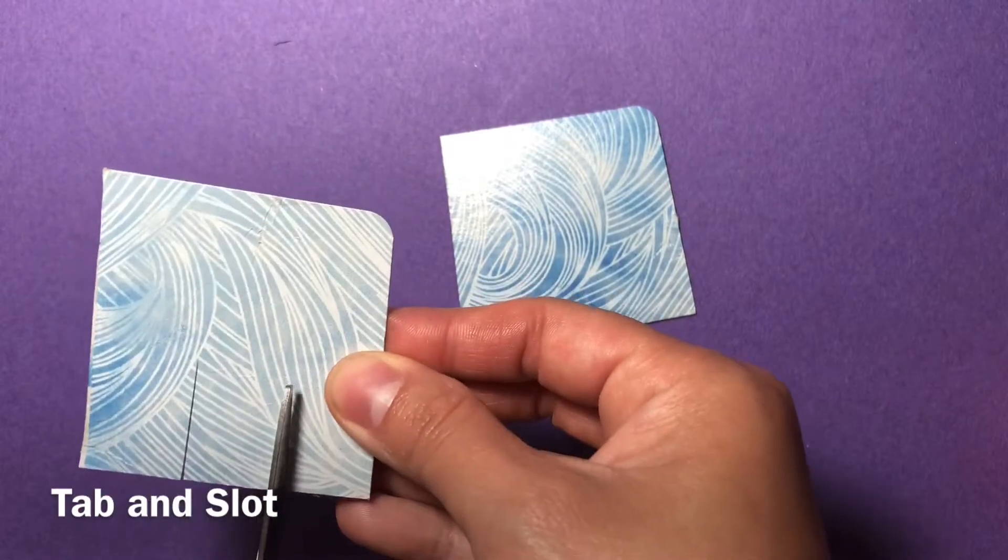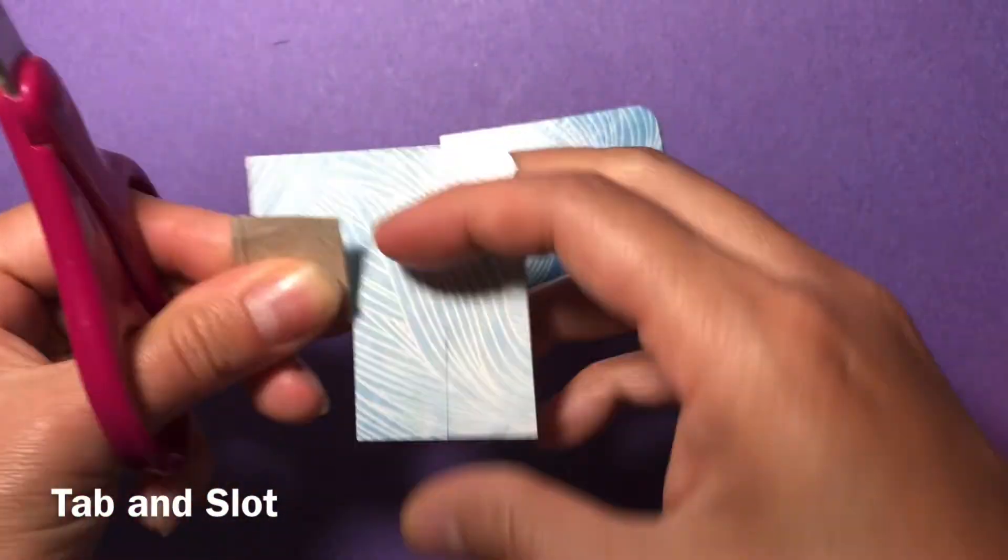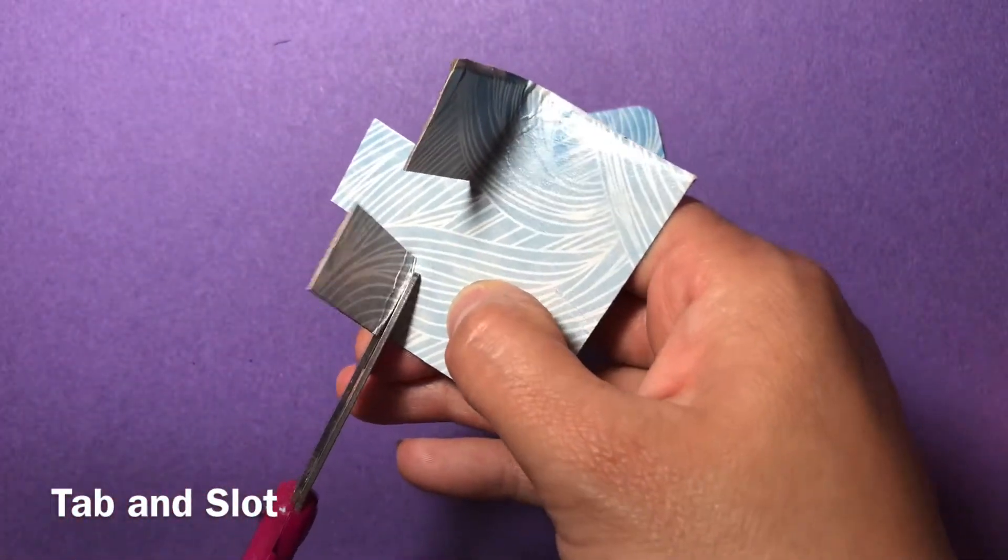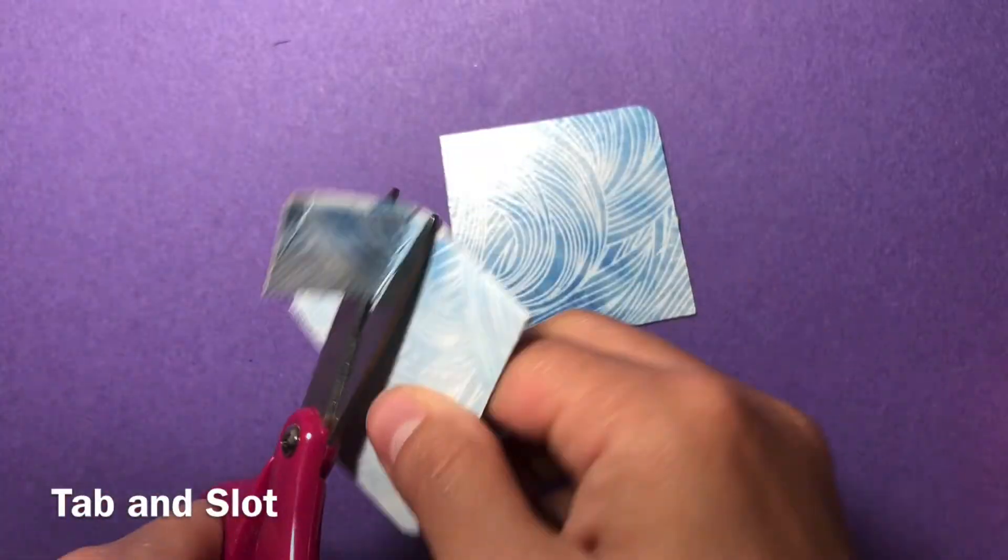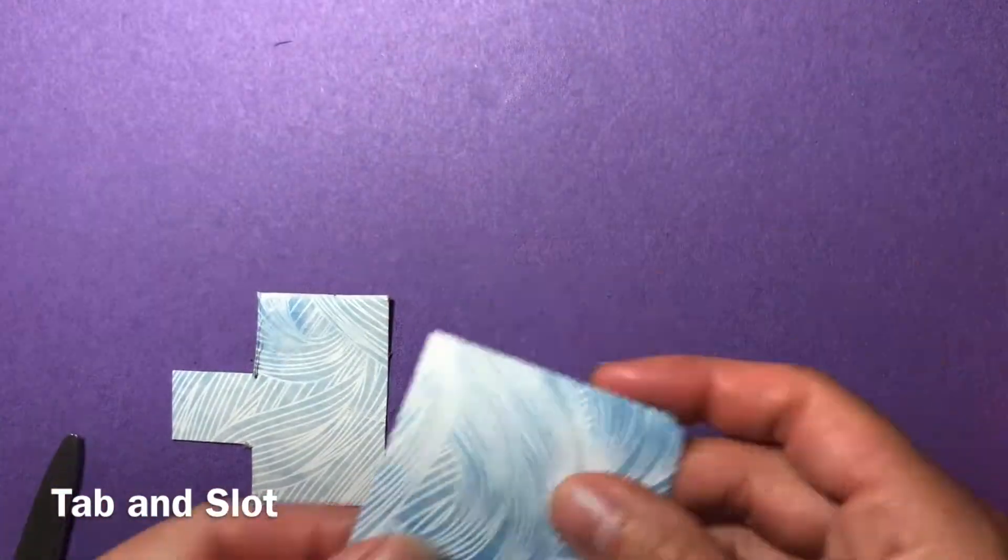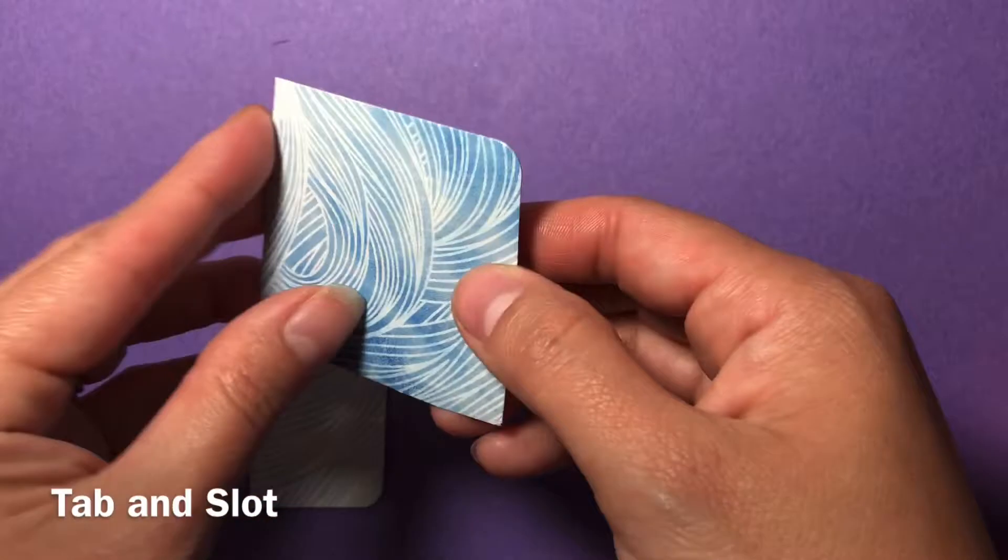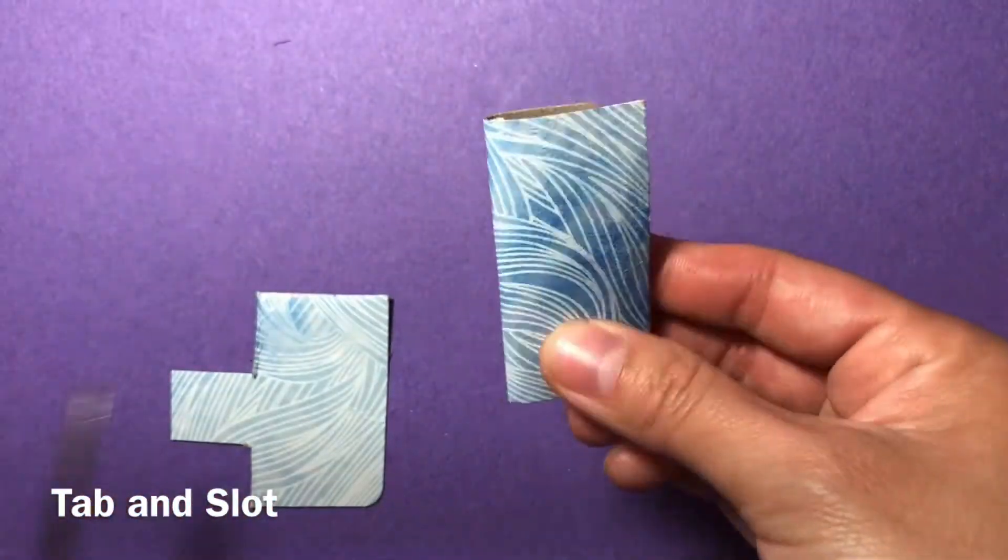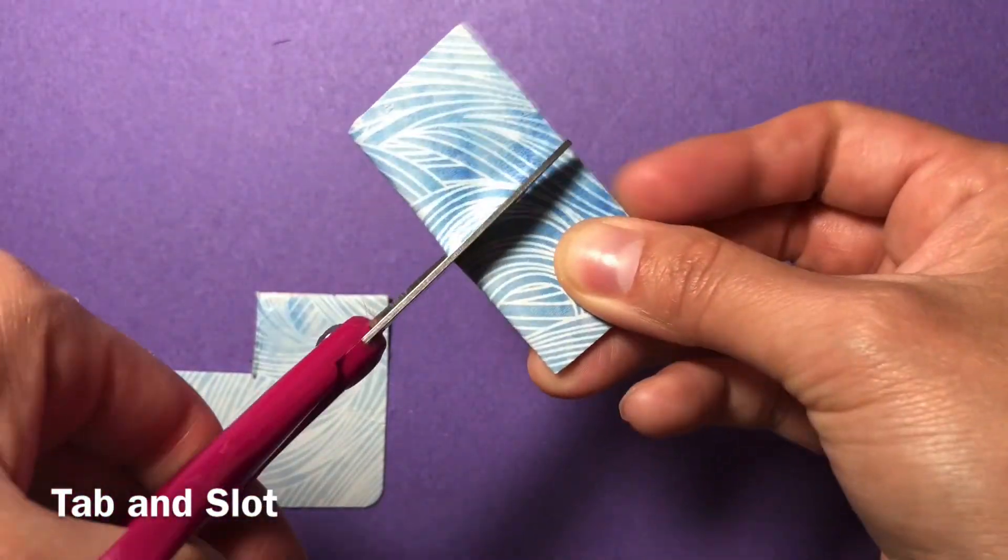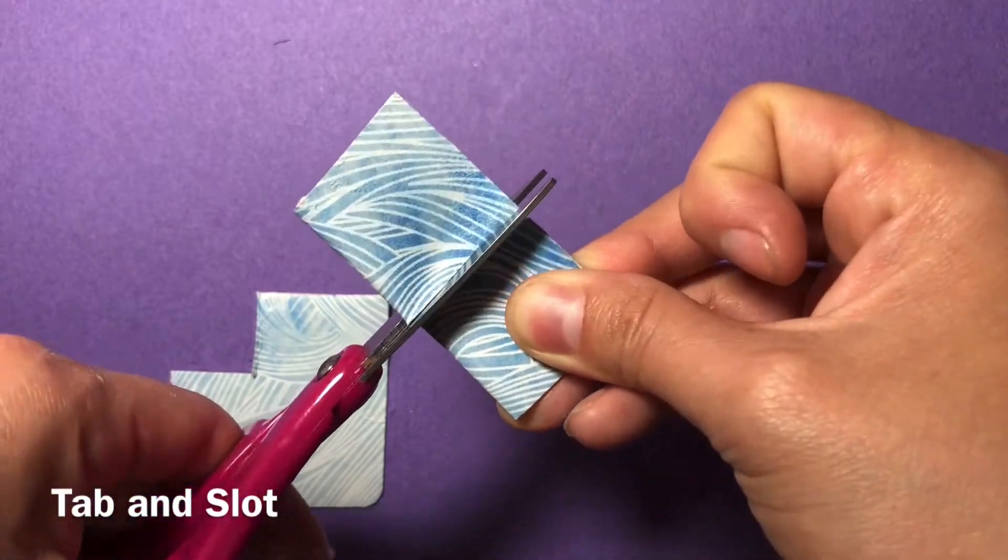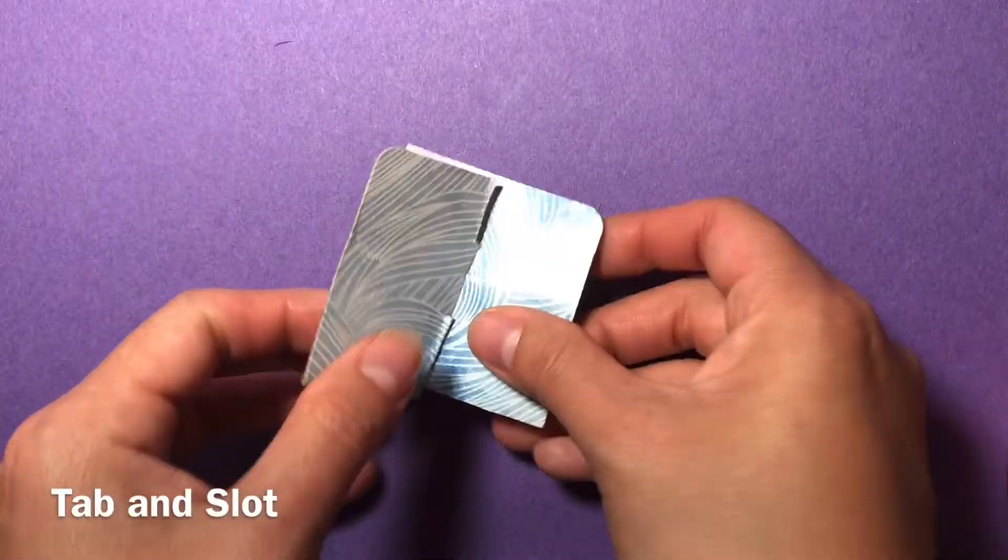A tab and slot is where you cut two strips in the first square and cut off the edges after bending them, it's easier. Then you fold the next one in half and cut right down the middle of that fold, then place your tab into the opening.